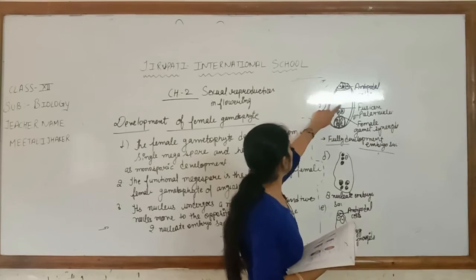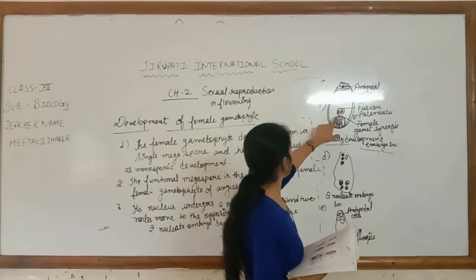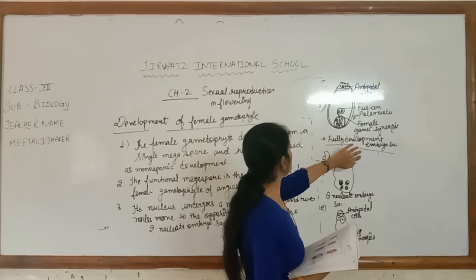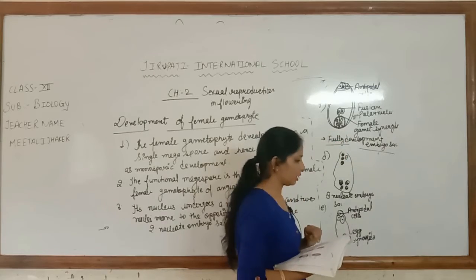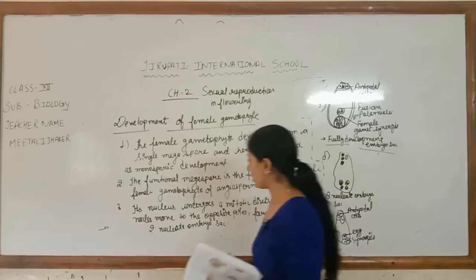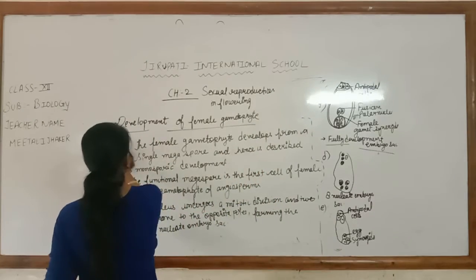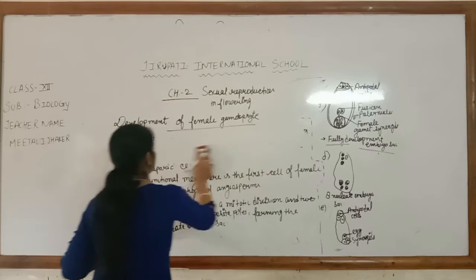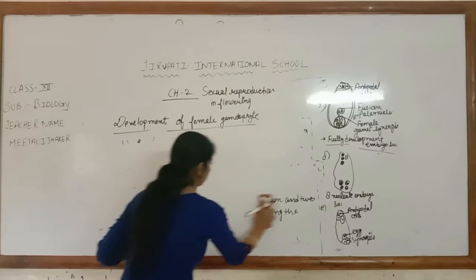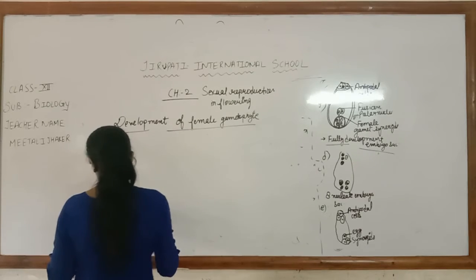In the final stage: antipodal cells remain in their position; in the mid-center is the fusion polar nuclei; and on the lower side is the female gamete with synergids. So the fully developed embryo sac is now formed. This brings us to fourth point.